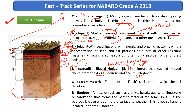Next, moving on to the C layer — this is basically the parent material, the material from which the soil is actually developed. This material is going to be pieces of rocks. And last, there is a layer called R. Whenever you find the letter R denoted in a soil profile, it refers to bedrock. It is located under the C horizon. It is a mass of rock — such as granite, basalt, or limestone — that forms the parent material for some soils.